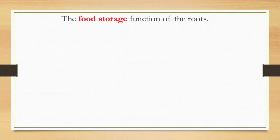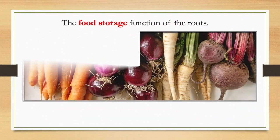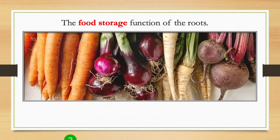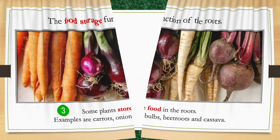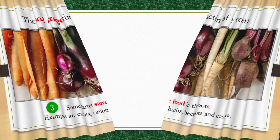Three, some plants store food in the roots. Examples are carrots, onion bulbs, beetroots and cassava.